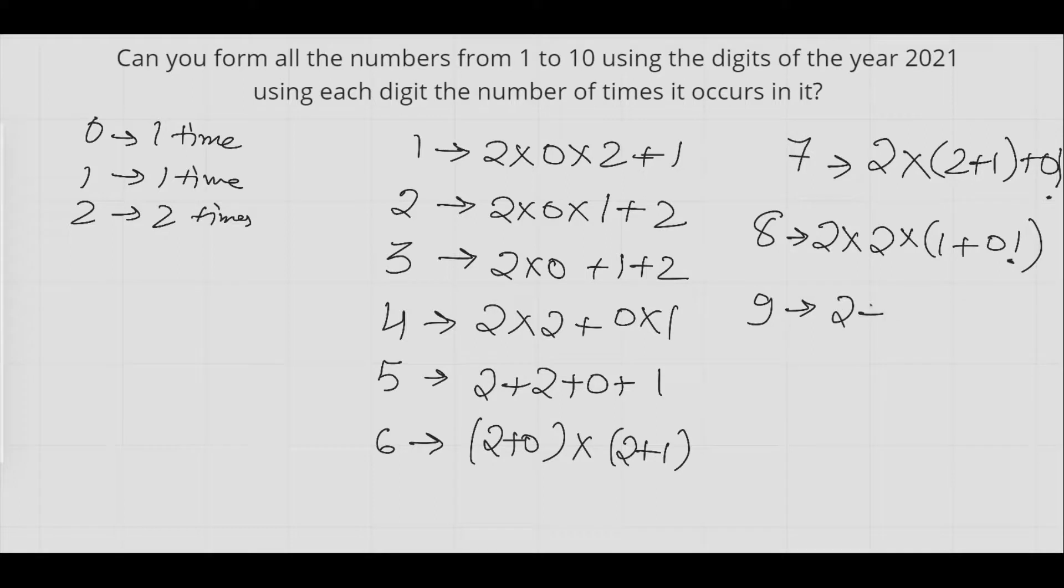We can do it using 2+1, which is three, and 2+0 factorial, so we can multiply both.